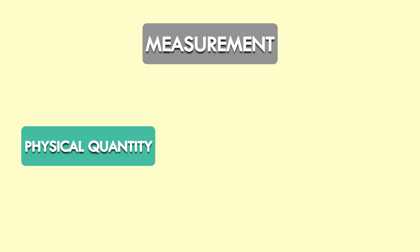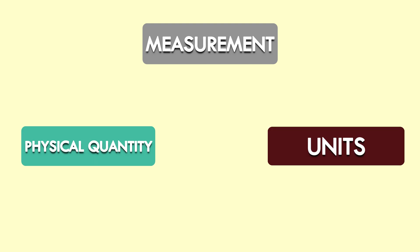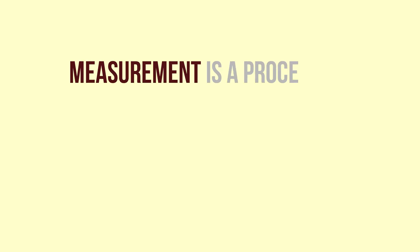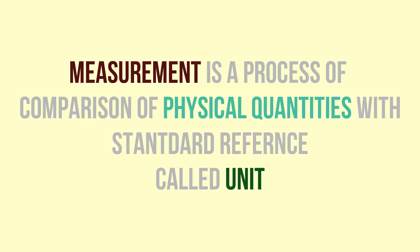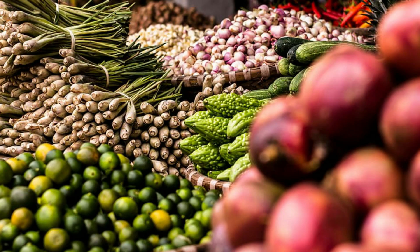Let us begin our discussion with three important terms which are related to one another: measurement, physical quantity, and unit of a physical quantity. To understand how these terms are related, let me give you the definition of measurement. Measurement is a process of comparison of a physical quantity with a standard reference called a unit.